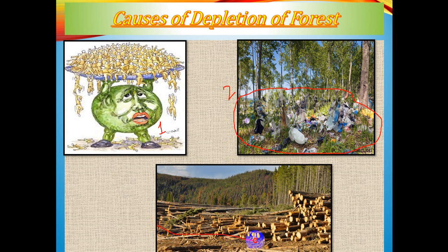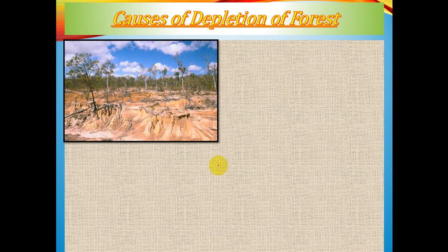The fourth cause of forest depletion is soil erosion, whether natural or man-made, which damages the forest cover. The picture shows trees lying down due to soil erosion. Whatever the cause of soil erosion, it creates damage to the forest cover.